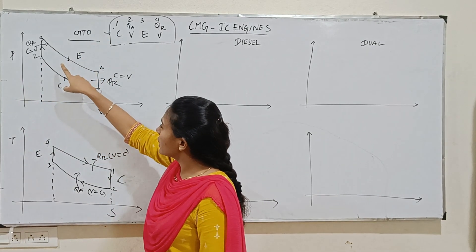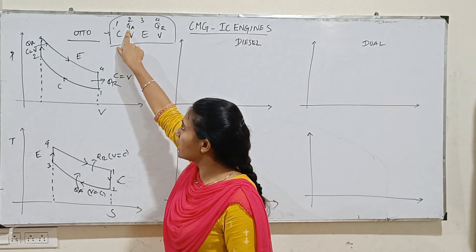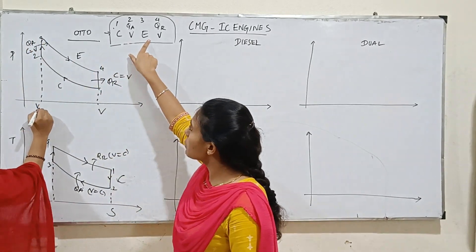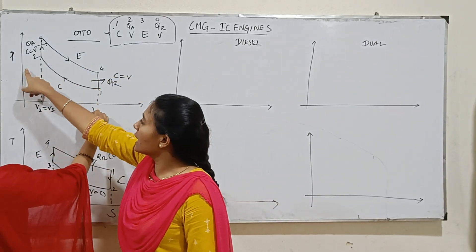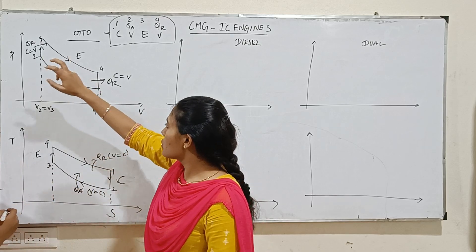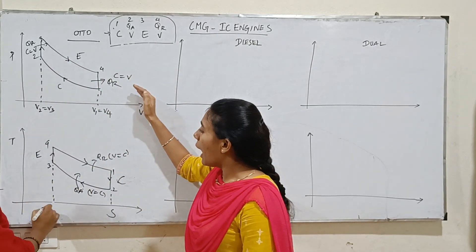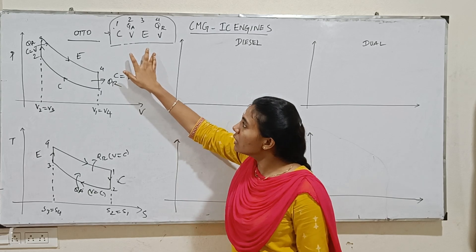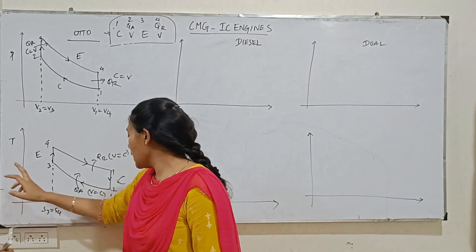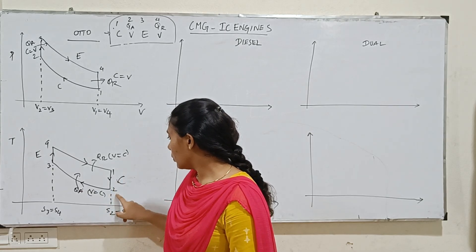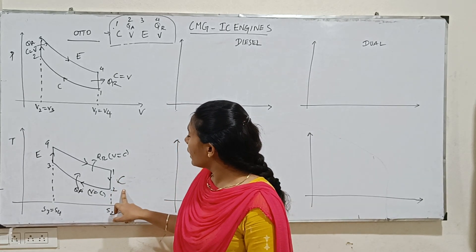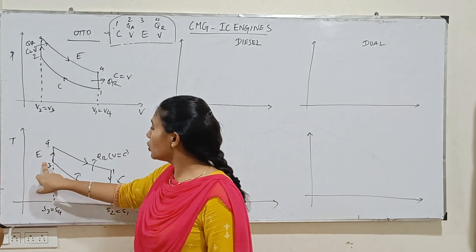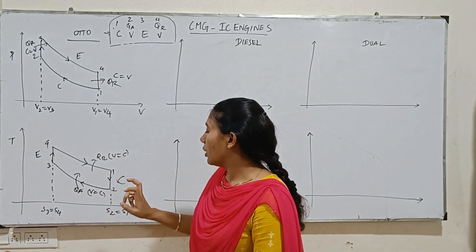From 1 to 2 is isentropic compression. At constant volume, heat addition from 2 to 3. From 3 to 4 is isentropic expansion, where pressure is reduced. From 4 to 1 is heat rejection at constant volume. In the TS diagram: 1 to 2 isentropic compression, 2 to 3 constant volume heat addition, 3 to 4 isentropic expansion, 4 to 1 heat rejection at constant volume.